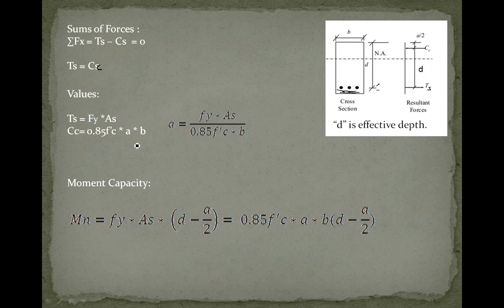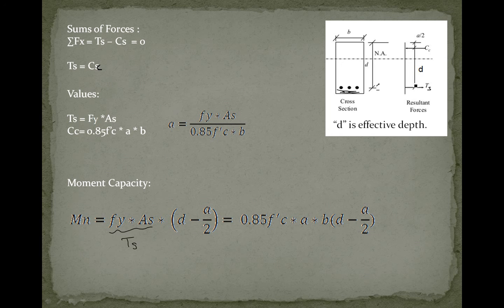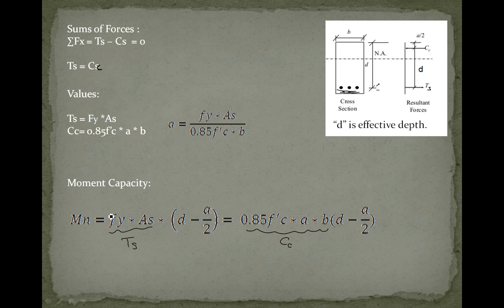Because the two forces are equal and acting in opposite directions, they form a moment couple. Its value is either of the two forces times the distance separating them, called the moment arm. So Mn equals fy times As (which is Ts) times the moment arm (d − a/2), or equivalently Cc times (d − a/2). The Mn value is what we call the nominal moment capacity, representing how much the beam can carry before failure.